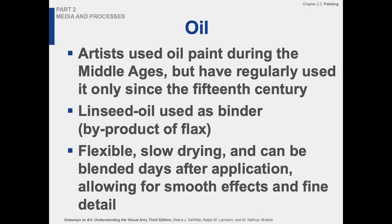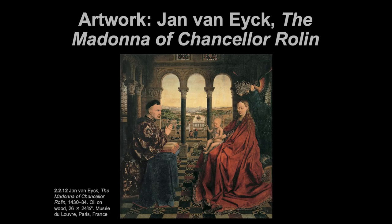Linseed oil is the binder. You have your pigment — the same pigment you had with tempera, encaustic, and fresco. You went and got it from whatever vegetable or mineral, ground it down into a powder, and then mixed it now with linseed oil. Flexible and slow drying. And the thing too that happens with oil on canvas is they can roll up these giant paintings and transport them. They no longer have to paint them in the location where they're going to be seen. They can travel really easily now without cracking, like they would on wood.